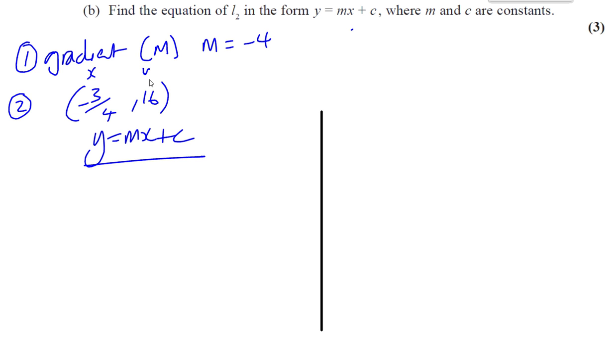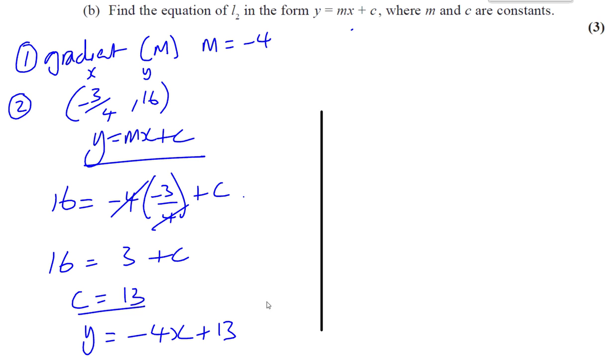This is like your x and this is like your y. So you're going to put 16. Replace the y by the y coordinate of the point we have. Equals m, which is minus 4. Times x, which is the x coordinate, which is minus 3 over 4. Plus c. So the only unknown now is c. So we can find it. Now this cancels with the 4. So you've got 16. And you've got minus 3, which is plus 3. So c is going to equal 13. 16 minus 3, which is 13. So once you know what c is, you can say y equals minus 4x plus 13. Okay, that's one way of doing it.